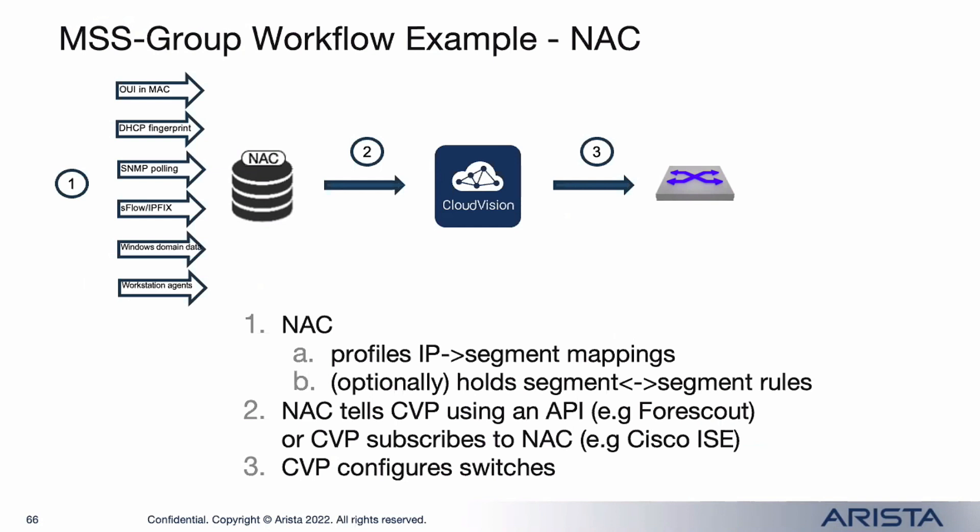The NAC can get information about endpoints and profile them into different groups using DHCP fingerprinting, SNMP polling, flow data, and more. Once the NAC gets this information and puts it into groups, it can also define group-to-group policies. That information is then passed on to Cloud Vision. The NAC can use Cloud Vision APIs to send this information, or we can subscribe to the NAC if they offer a subscription-based feed. Cloud Vision then acts as an orchestrator and quickly configures the switches.